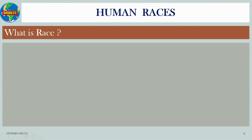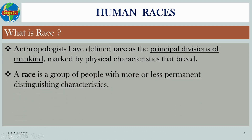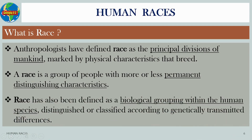What is race? Anthropologists have defined race as the principal divisions of mankind marked by physical characteristics that breed true. A race is a group of people with more or less permanent distinguishing characteristics. Race has also been defined as a biological grouping within the human species distinguished or classified according to genetically transmitted differences.